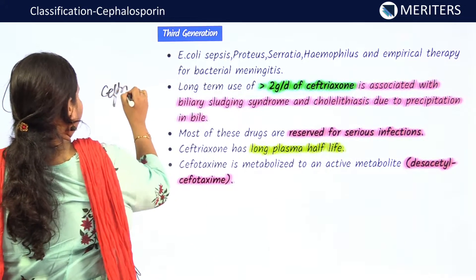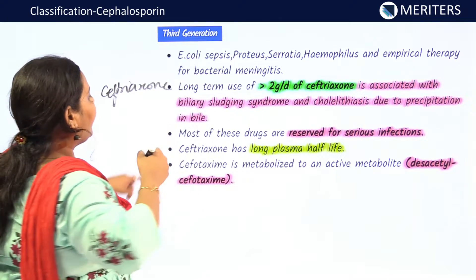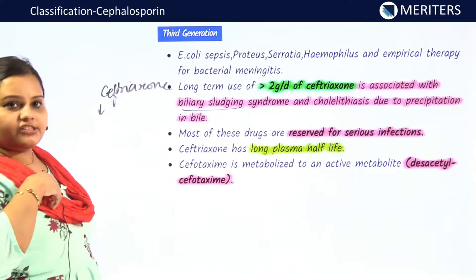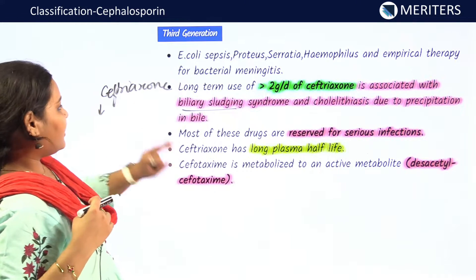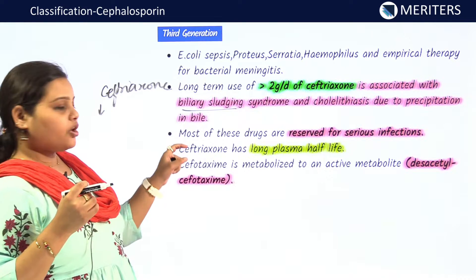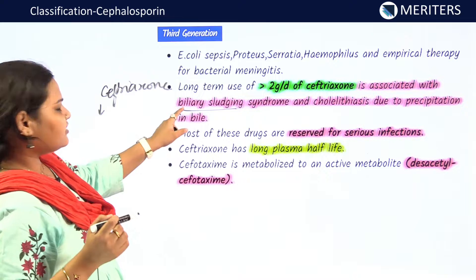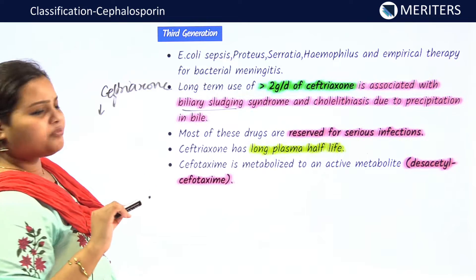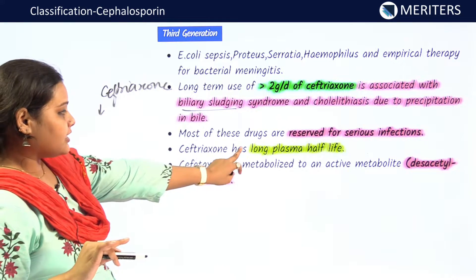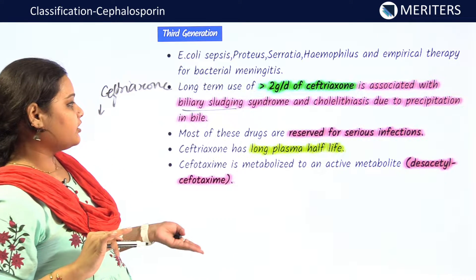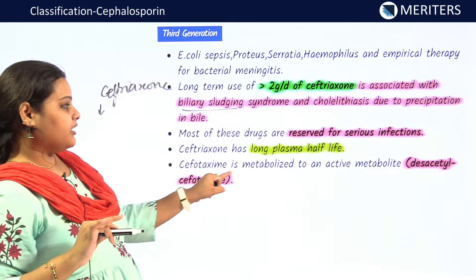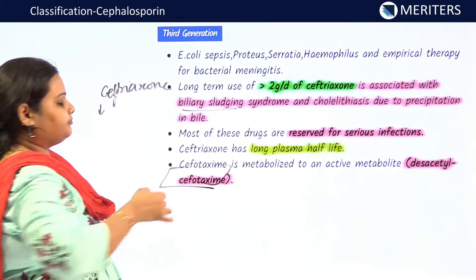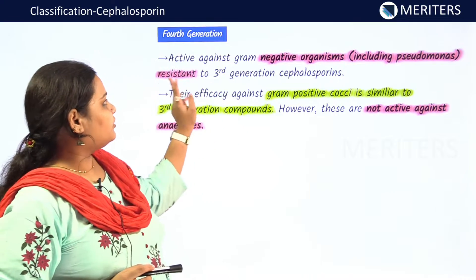Third generation cephalosporins are useful for prophylaxis of meningitis. Ceftriaxone is a key drug — used for typhoid — but it causes biliary sludging syndrome, where it precipitates cholesterol and calcium salts in bile, leading to cholelithiasis. Most of these drugs are reserved for serious infections. Ceftriaxone has a longer plasma half-life, which is why it is used for serious conditions. Cefotaxime is metabolized to the active metabolite desacetyl-cefotaxime.